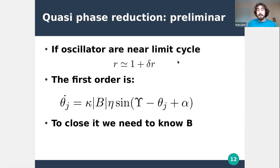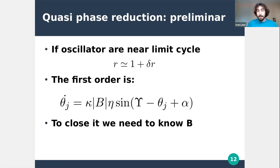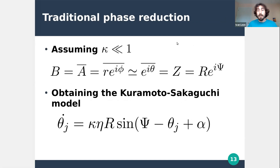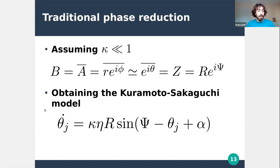We expand and keep only first order terms in the phase equation, obtaining a reduced equation. However, this equation is not closed because it requires the mean field b, which depends on the dynamical variables we need to eliminate. In traditional phase reduction, one assumes small coupling and approximates b by the Kuramoto order parameter, and plugging it in yields the Kuramoto-Sakaguchi model.